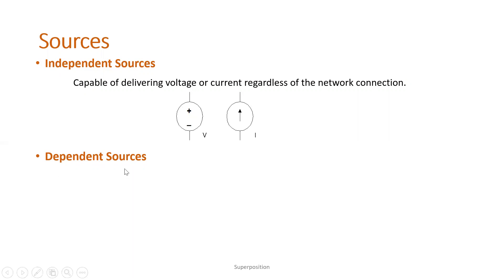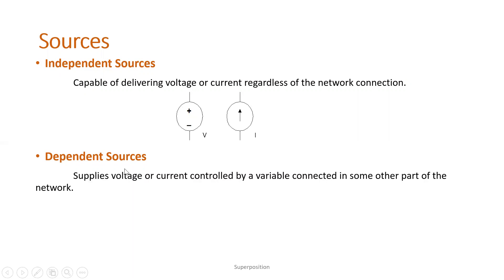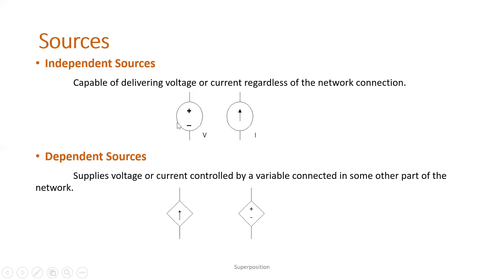Dependent sources are sources which cannot supply energy if the controlling element is absent. The symbol for dependent sources is a parallelogram or diamond shape. Inside, you still have the arrow indicating current flow for current sources, and a plus and minus sign for voltage sources. Remember: circle if it's independent, diamond for dependent sources.